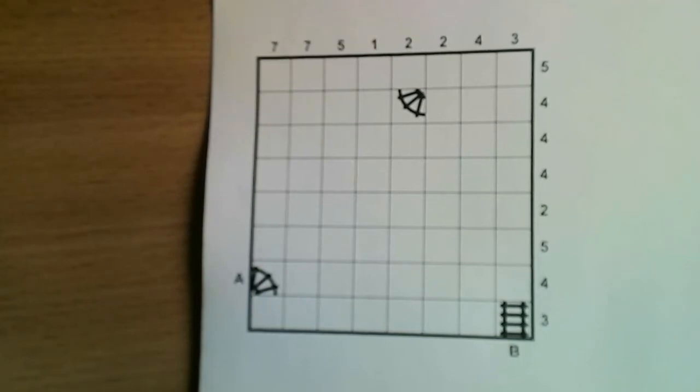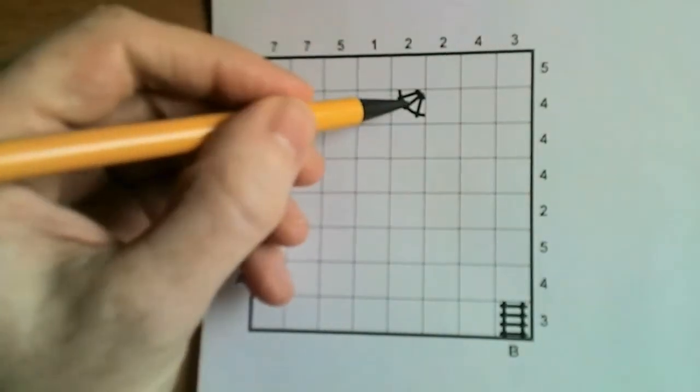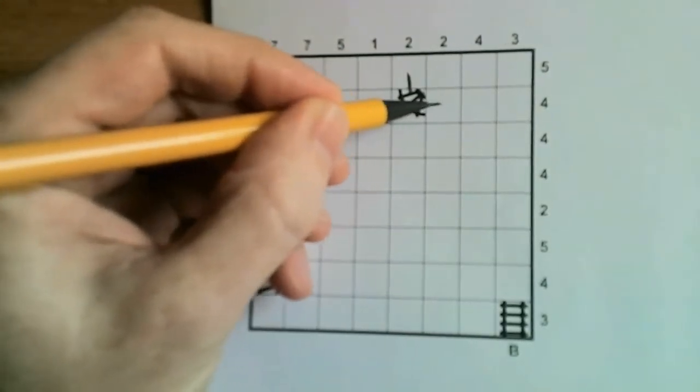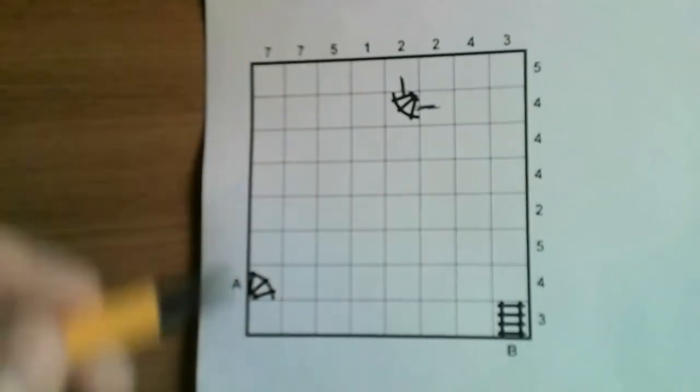So when solving a train tracks puzzle it's usually best to first use the given pieces of track which you can always extend. So we see here this piece of track must move up here and must move out here because it's at right angles.